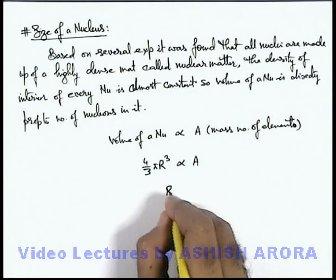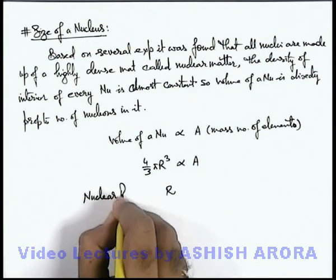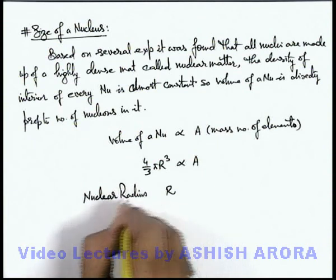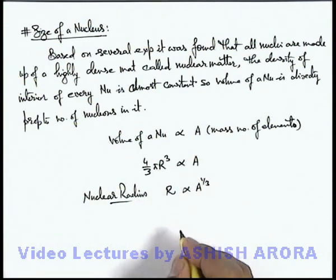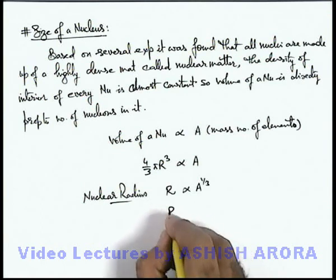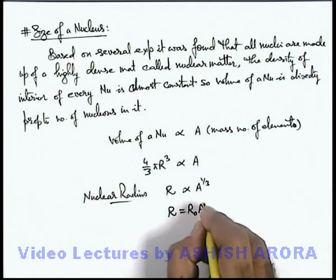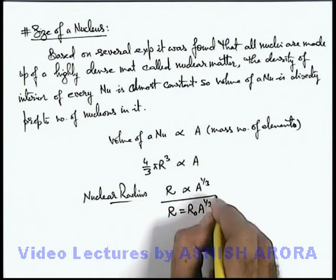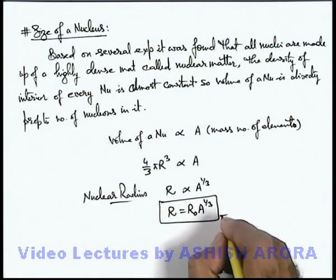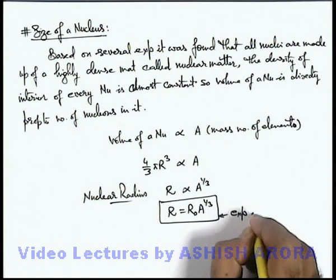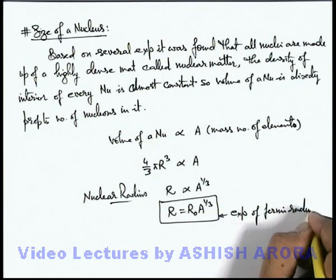So the nuclear radius r is directly proportional to the cube root of A. This expression was given by Fermi, and it is also called the expression of Fermi radius.